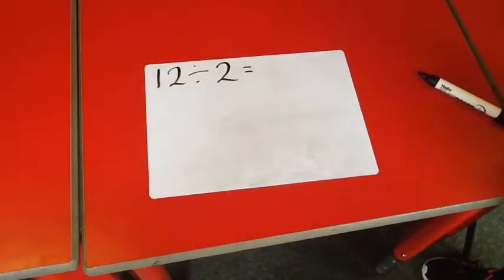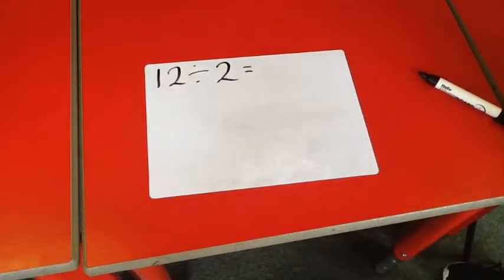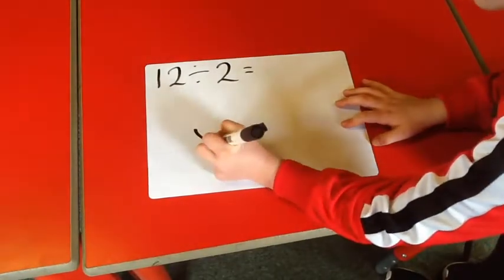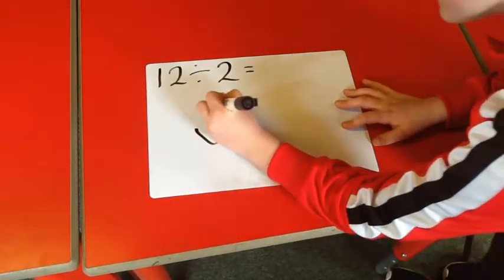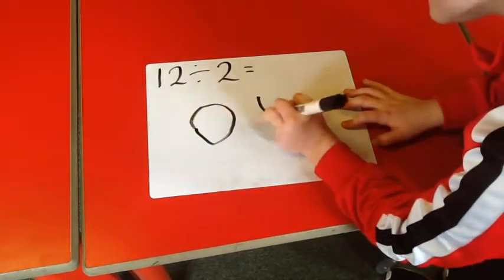Today we're doing this sum: 12 divided by 2. So first we need 2 groups. 1, 2.